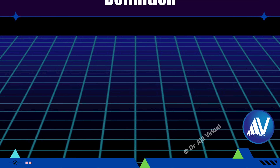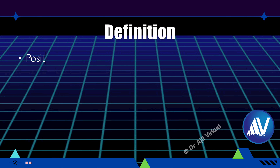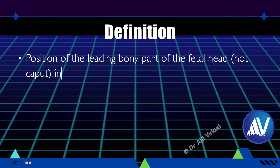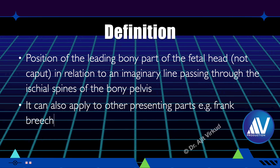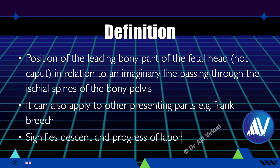Traditionally, station of fetal head is defined as the position of the leading bony part of the fetal head — not caput — in relationship to an imaginary line passing through the ischial spines of the bony pelvis. Although we apply the word fetal head, it can also apply to other presenting parts, especially frank breech. Station is an indicator of the degree of descent of the fetal presenting part into the pelvic cavity, and therefore it is a reflection of progress of labor.